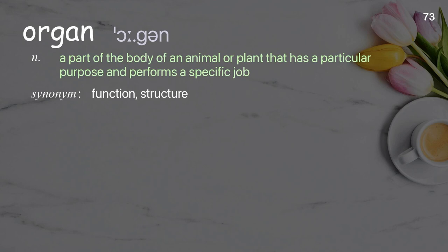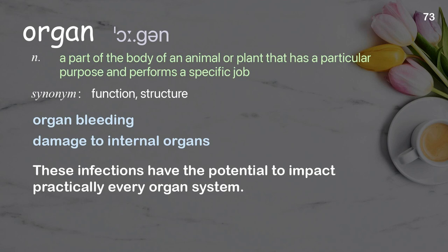Organ: A part of the body of an animal or plant that has a particular purpose and performs a specific job. Examples: organ bleeding, damage to internal organs. These infections have the potential to impact practically every organ system.